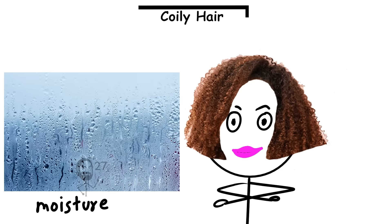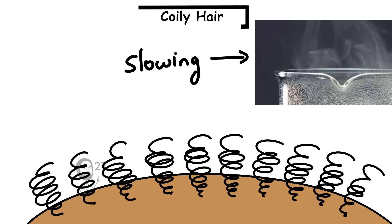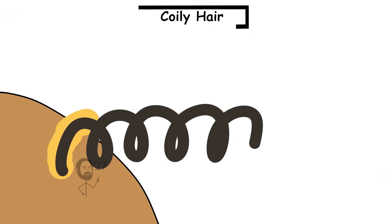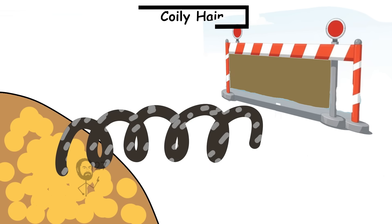At the same time, coily hair helps conserve moisture in unforgiving climates. Its twists and zigzags reduce direct exposure of the scalp to air and wind, slowing evaporation. The spiral pattern also limits how far sebum can travel down the shaft. While this makes the strands more vulnerable to dryness, it concentrates natural oils at the scalp, forming a local barrier that helps retain hydration where it matters most.